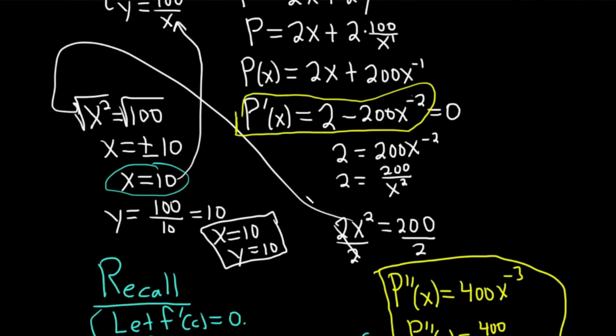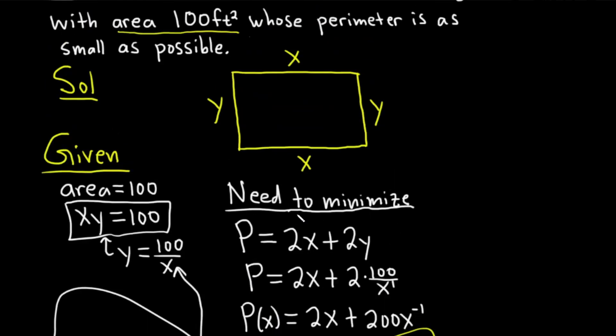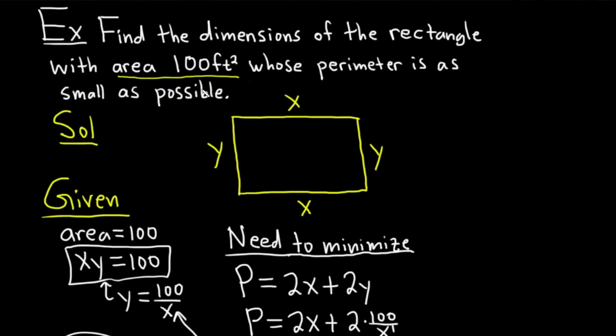Because once you can do one of these, in theory, you can do other problems. Even though they're all different, they all follow the same format. The question wants the dimensions of a rectangle with area 100 feet squared, whose perimeter is as small as possible.